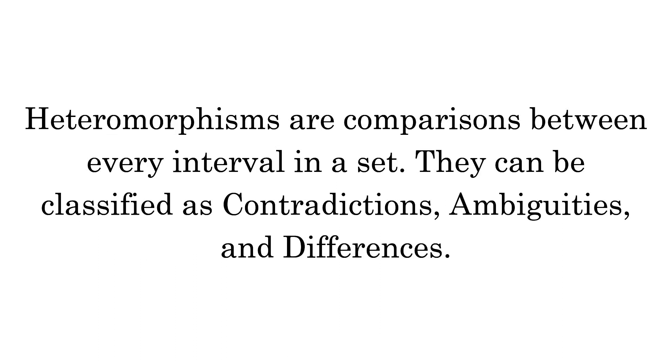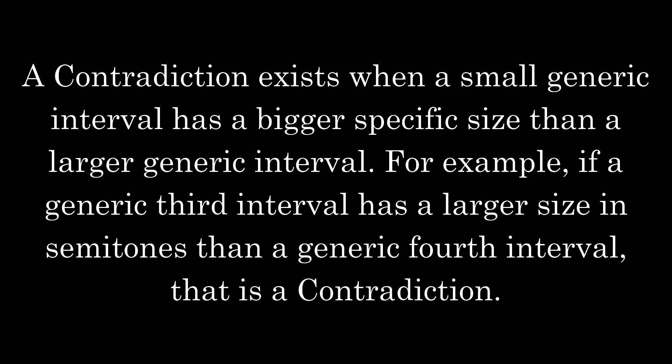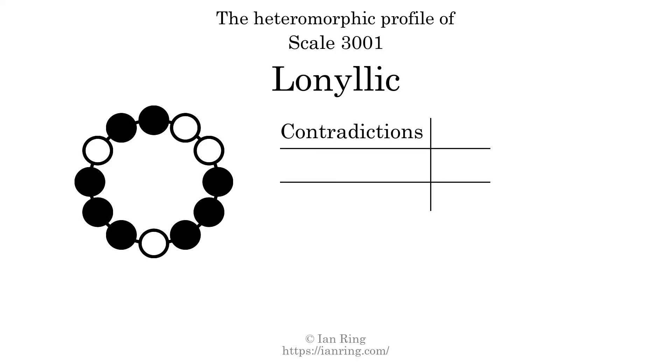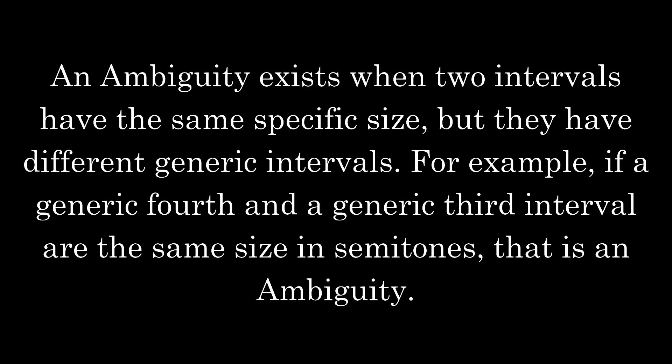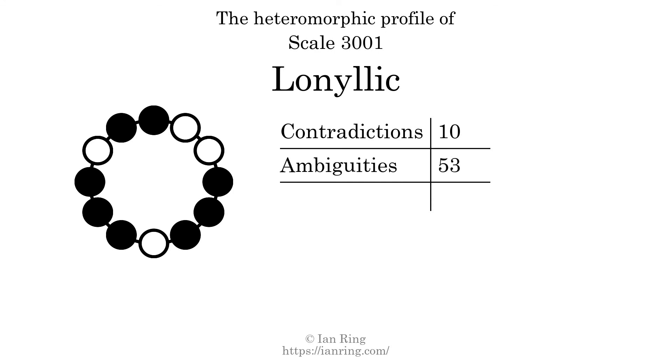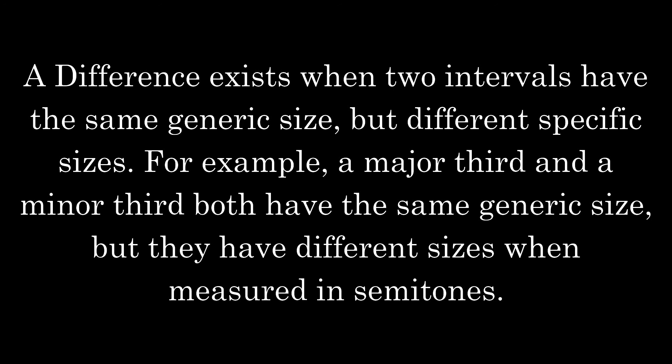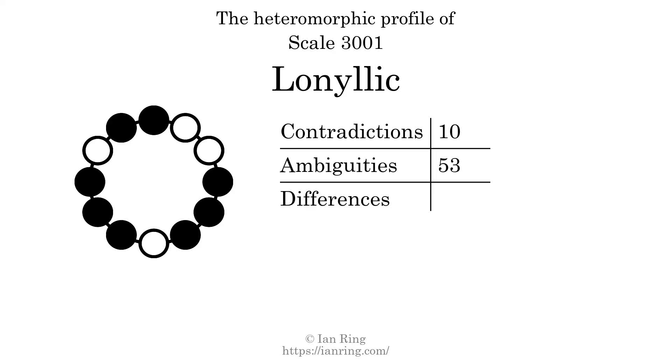Heteromorphisms are comparisons between every interval in a set. They can be classified as contradictions, ambiguities, and differences. A contradiction exists when a small generic interval has a bigger specific size than a larger generic interval. An ambiguity exists when two intervals have the same specific size but different generic intervals. A difference exists when two intervals have the same generic size but different specific sizes, such as a major 3rd and a minor 3rd. The number of contradictions in this scale is 10, ambiguities is 53, and differences is 129.